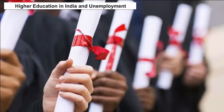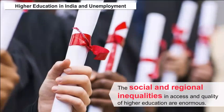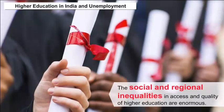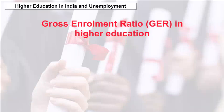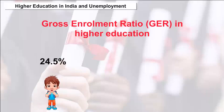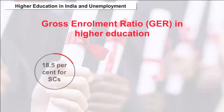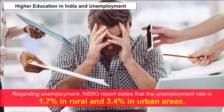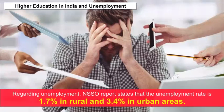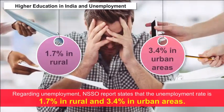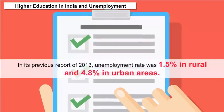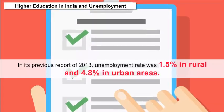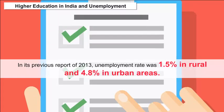Higher Education in India and Unemployment: The social and regional inequalities in access and quality of higher education are enormous. The Gross Enrolment Ratio (GER) in higher education is 24.5% for boys, 22.7% for girls, 18.5% for SCs, and 13.3% for STs in 2014–15. Regarding unemployment, an NSSO report states that the unemployment rate is 1.7% in rural and 3.4% in urban areas, compared to 1.5% rural and 4.8% urban in its 2013 report.